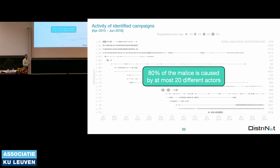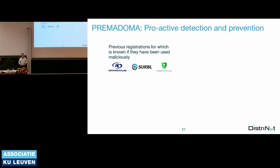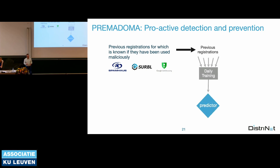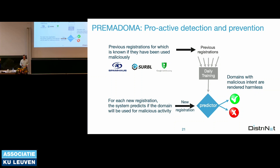Most importantly, these campaigns represent 80% of all abusive domain name registrations in .eu — 80% of the malice is caused by up to 20 or 30 actors. Using machine learning, if you could focus on those actors, you could already eliminate a lot of malice from a TLD. We apply basic machine learning: feature engineering and classical algorithms. Starting with historical registration data, we augment it with block list data from Google Safe Browsing and Spamhaus, then train predictors. These predictors are used at registration time to decide whether a domain name has malicious intent.